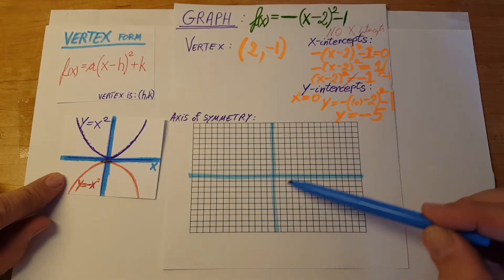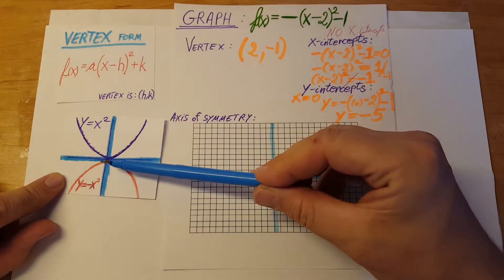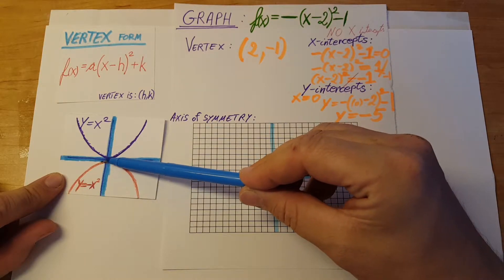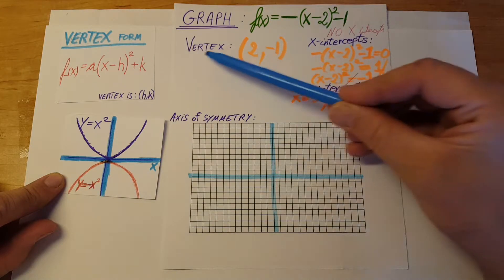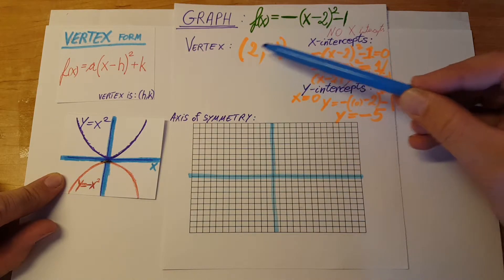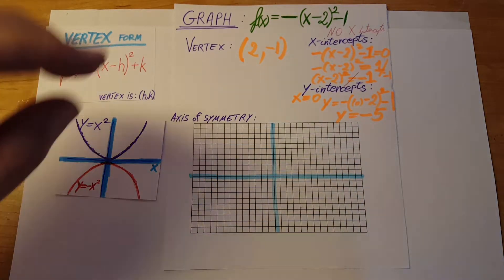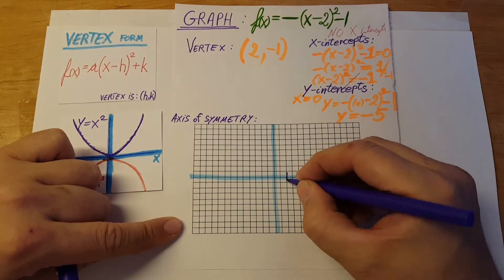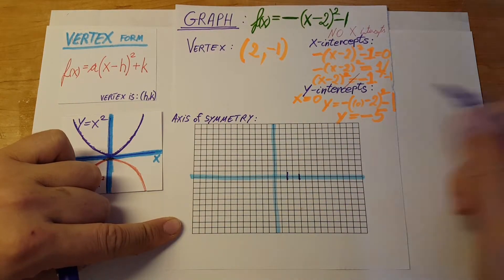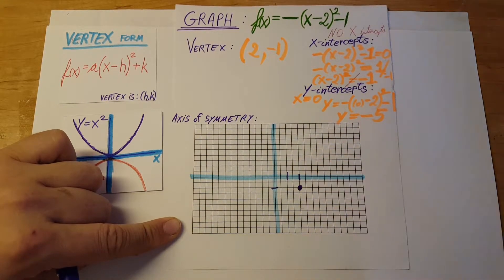We know our parabola is facing downward. The other important thing is that its vertex is not at (0, 0) – it's moved to the vertex we found at (2, -1). So we can mark that. One, two, and negative one. Our vertex will be right here.